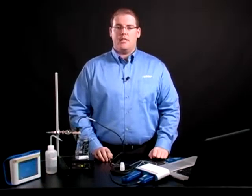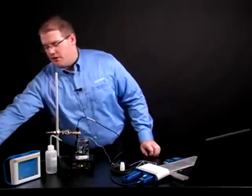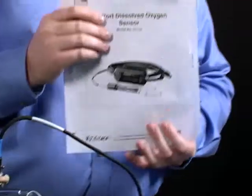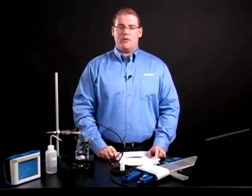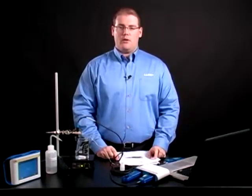Next, we need to find the calibration value. This can be found in the dissolved oxygen sensor manual in Appendix C. To find the value, we need to know the actual barometric pressure as well as the temperature of our water sample.